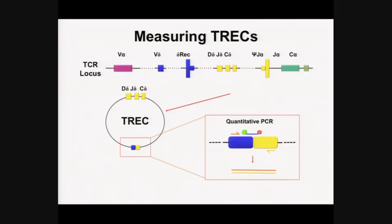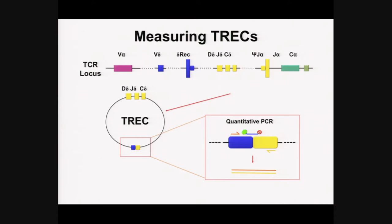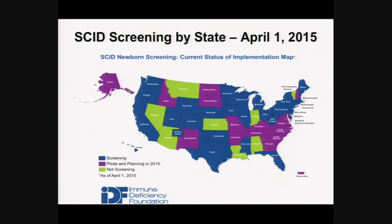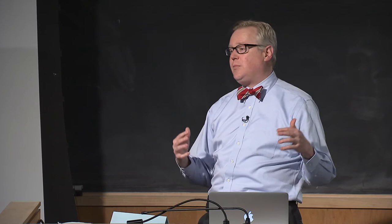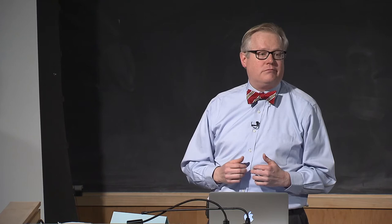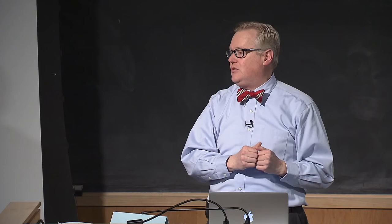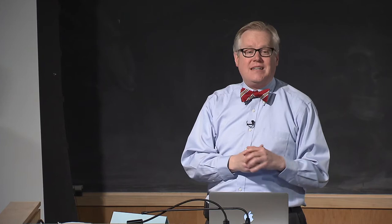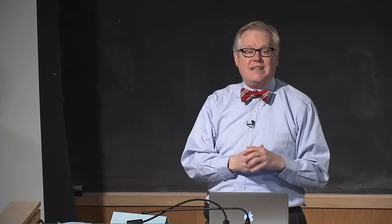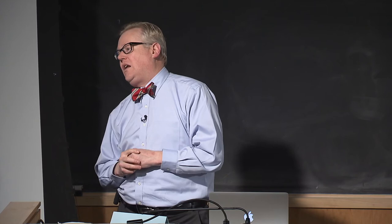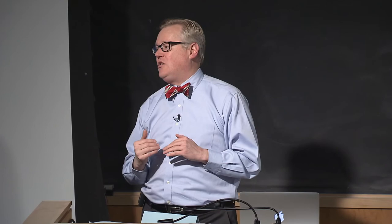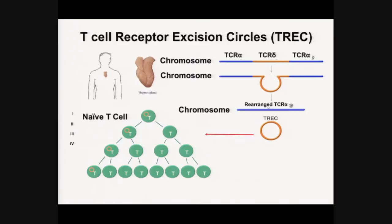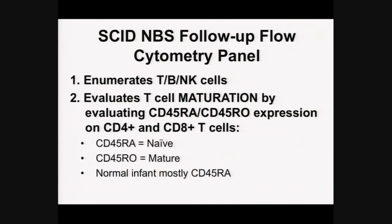States screening for SCID — the blue states — are expanding, with more coming online. Survival in transplanted patients identified by newborn screening is 95%. This is a huge success — taking kids otherwise consigned to certain death and making them long-term survivors. Another discovery: we thought the incidence of SCID was 1 in 100,000, but newborn screening shows it's 1 in 50,000. Half the babies never even made it to us before — either dying undiagnosed or missed entirely.